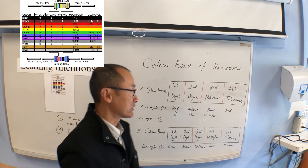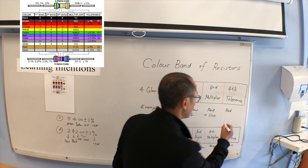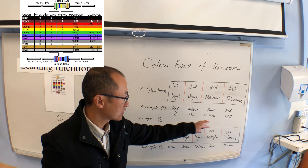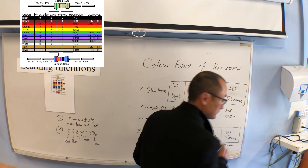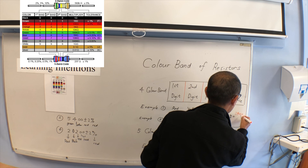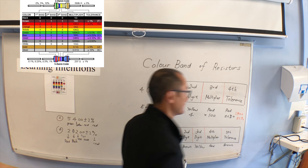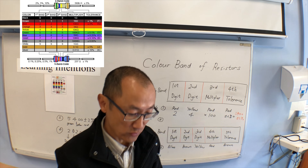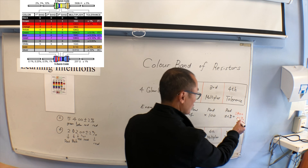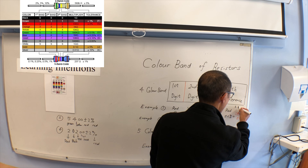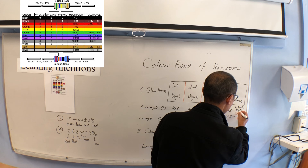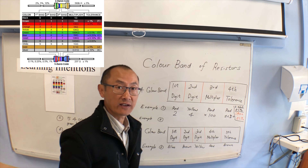The last one is the tolerance. For red, the tolerance is plus and minus two percent. When you put them together, it becomes twenty-four hundred plus and minus two percent. You can also write it as 4.2K ohm plus and minus two percent. Doesn't matter which way — both are correct.